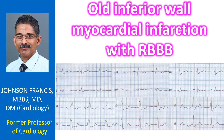Right bundle branch block in the setting of infarction occurs due to left anterior descending coronary artery involvement. In this case, either there is an independent conduction disorder, or there is associated involvement of the left anterior descending coronary artery along with the right coronary artery or left circumflex lesion, which could have caused the inferior wall infarction. This may also explain the relatively wider QRS for an RBBB.